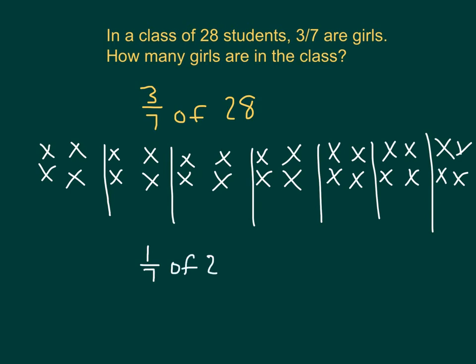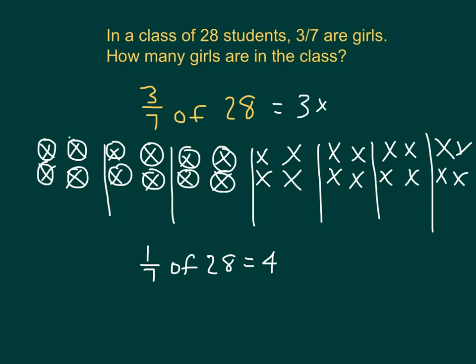1/7 of 28 would be 4 or 4 girls. Now they're saying that 3/7 are girls. So now we have to look at 1, 2, and 3 sevenths. And I will circle them to indicate that we are looking at those ones in particular. So all of those, that's 4, 8, and 12. We have 3 groups of 4. That's 3 times the 4, which does equal 12. We already knew that 1/7 of 28 is 4, so 3/7 of 28 is equal to 12. And it's asking us how many girls are in the class. There are 12 girls in this class of 28.